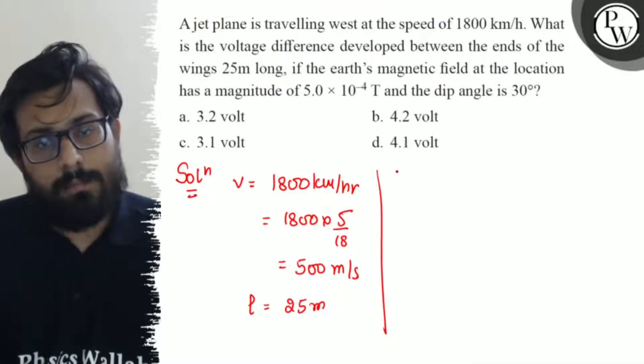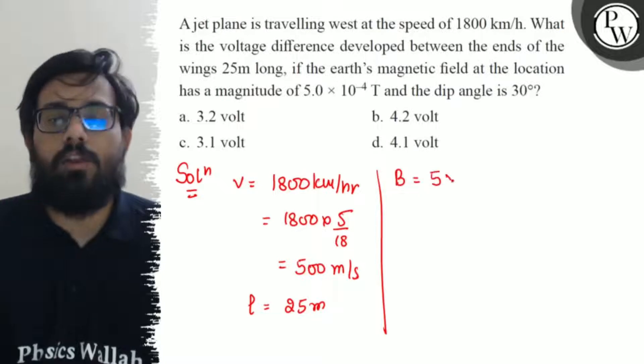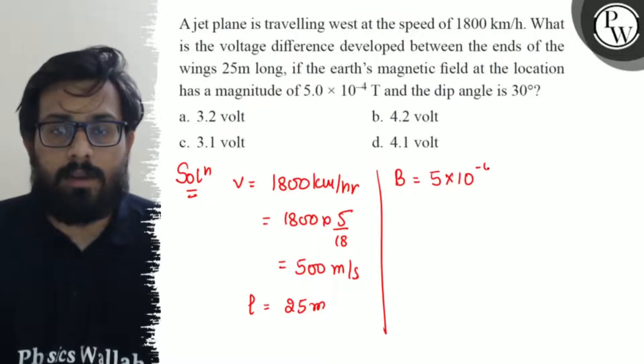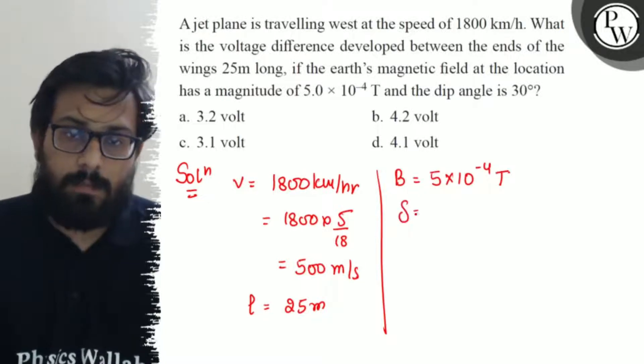Also I have a magnetic field given. Earth's magnetic field is 5 into 10 to the minus 4 Tesla. And also the dip angle is 30.